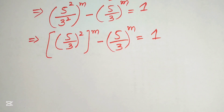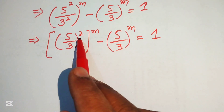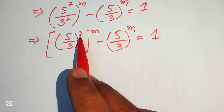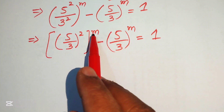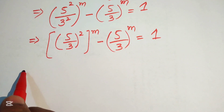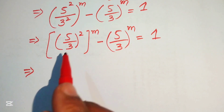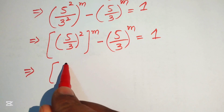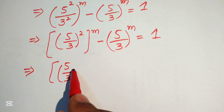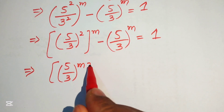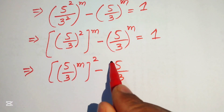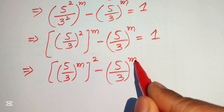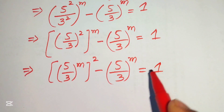We interchange the two values: we move the 2 to the outside and m to the inside of the bracket. This gives us (5/3)^m whole squared, minus (5/3)^m, equals 1.